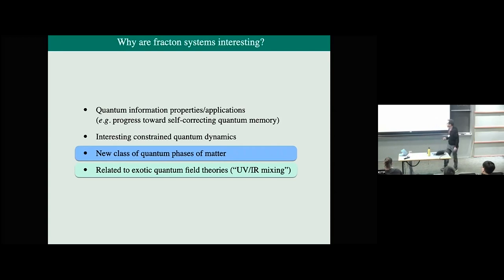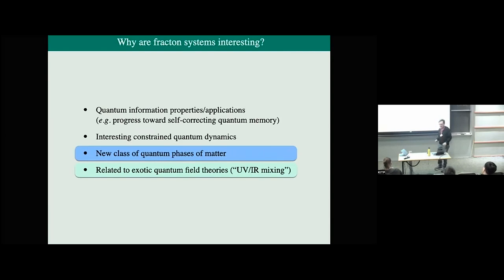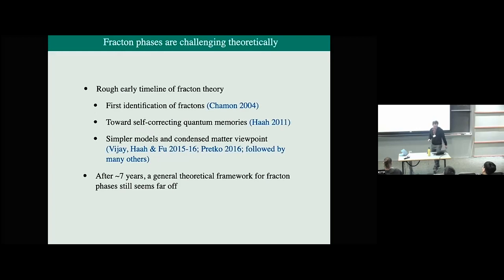As theorists when we discover something new, we say 'this is a new class of quantum phases of matter' — but why is this a particularly interesting new class? I think there is something particularly interesting about fracton phases. Before I explain that, I want to make a different but related point: fracton phases are really hard for theorists. I'll appeal to the historical record and draw a contrast with topological phases.